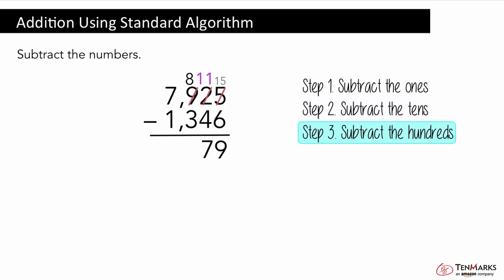We can take three hundreds away from eight hundreds. Absolutely. Eight hundreds minus three hundreds equals five hundreds. So there are five hundreds.